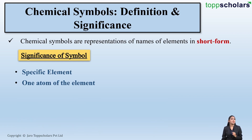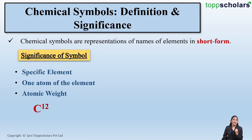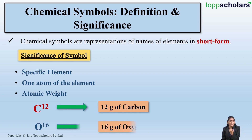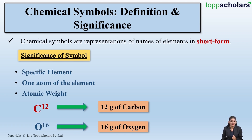These chemical symbols also help to represent the atomic weight. For example, C12 — here 12 stands for unified atomic mass, which also represents 12 grams of carbon, which is known as the gram atomic mass. Similarly, O16 — here 16 represents the unified atomic mass, which can also be represented as 16 grams of oxygen, which is called the gram atomic mass.